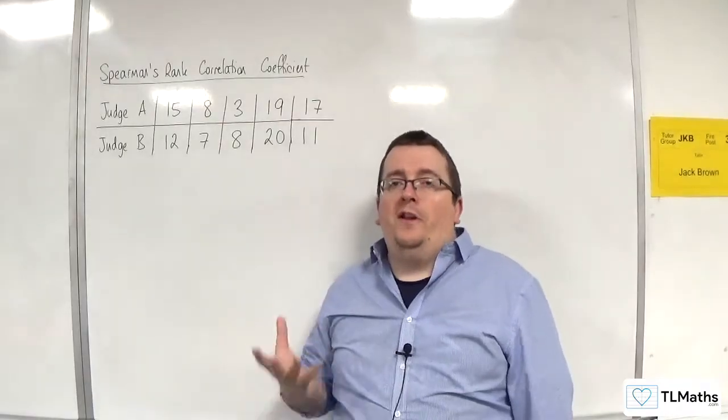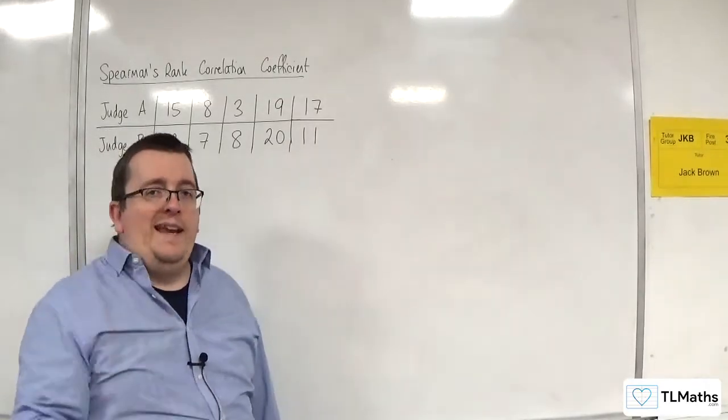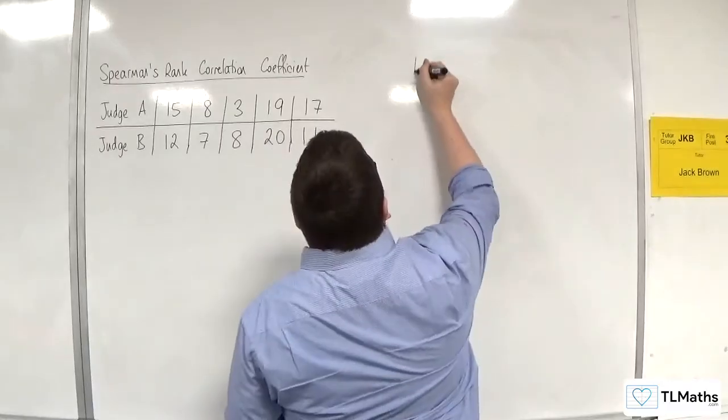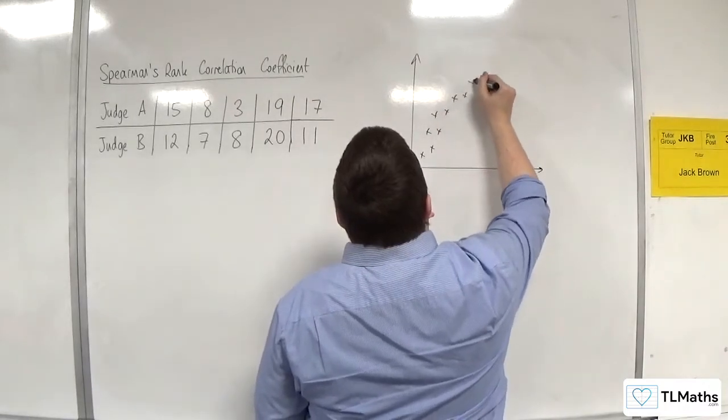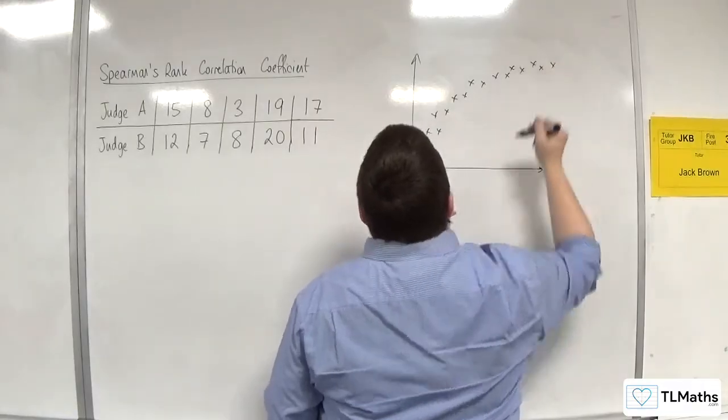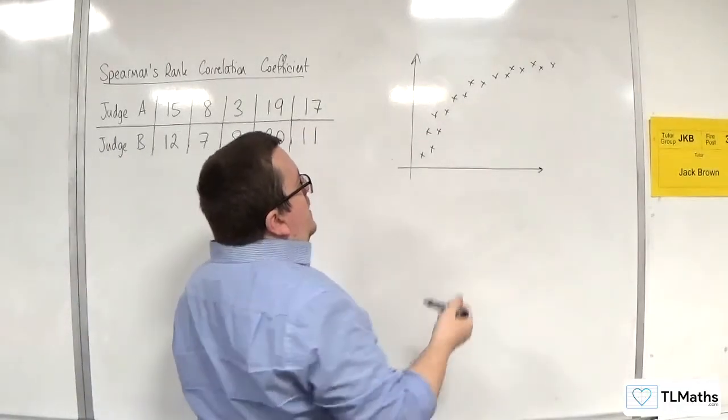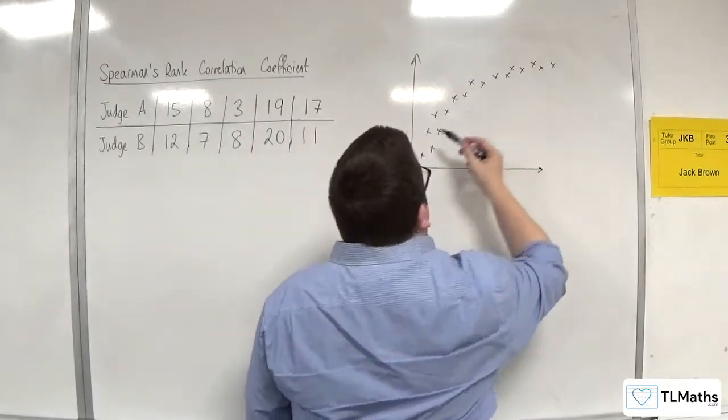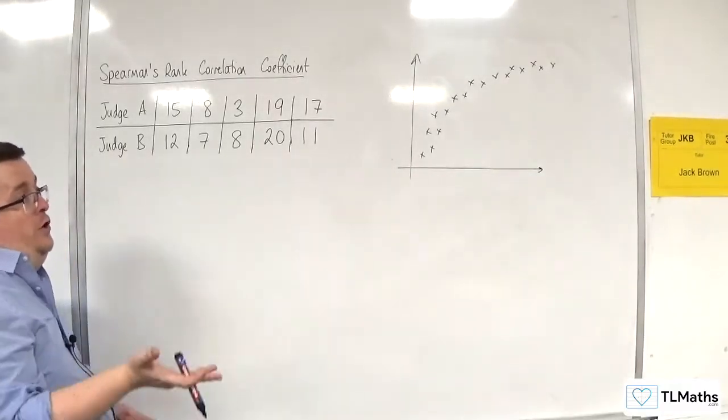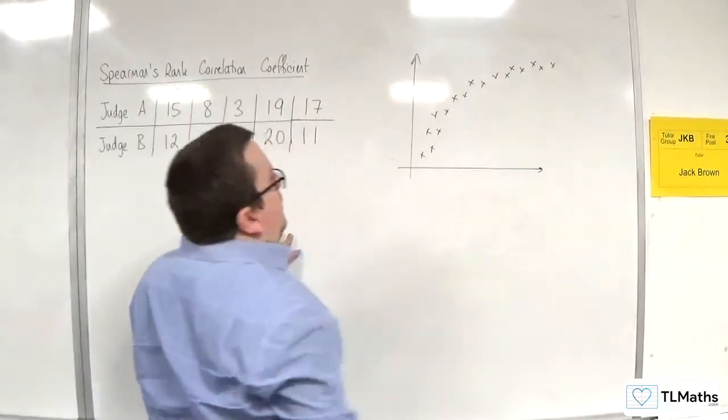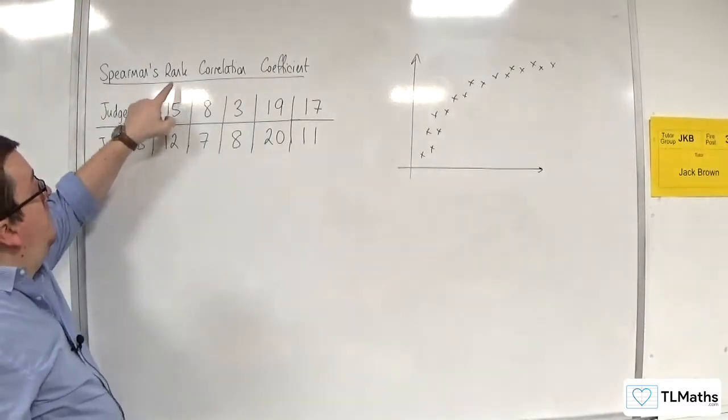Spearman's rank can also deal with non-linear situations. So the product moment correlation coefficient is giving you a measure of linear correlation. Whereas if the data looked maybe something like this, so it's definitely not linear correlation, because it's not close to a straight line, but it is seemingly curving upwards like that. So as one is increasing, the other is increasing, but not in a linear way. And you could also do it for going down that way, for example.